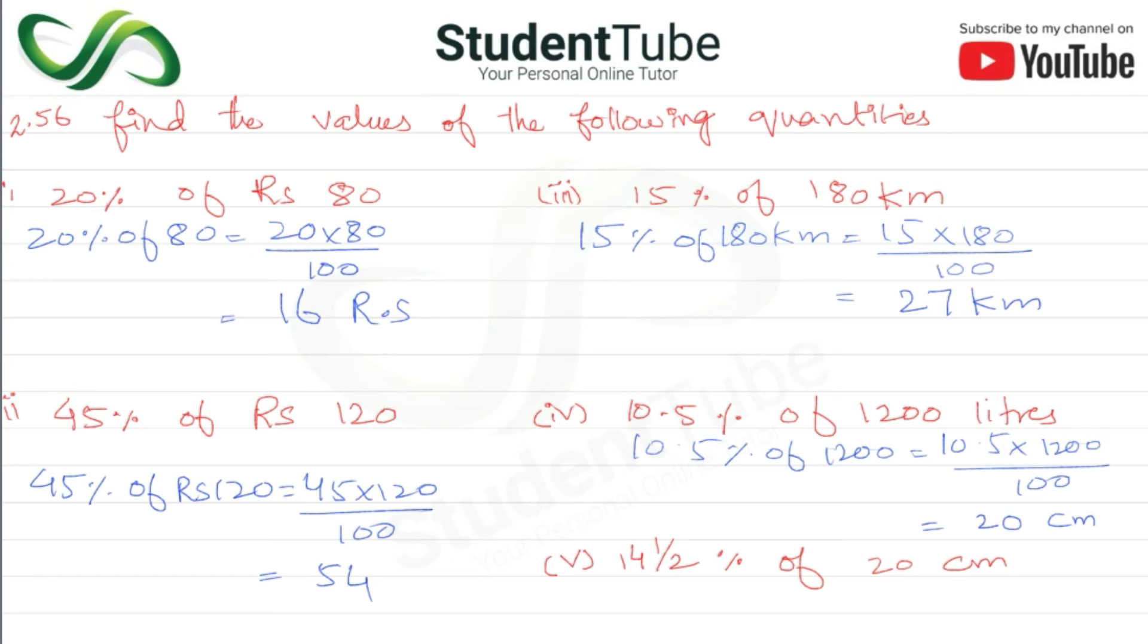Now 14 and one upon two, that means 14.5, one upon two means 0.5 percent of 20 centimeter. So it will be 14.5 into 20 divided by 100. The answer is 2.9 centimeters. These are very easy questions, I hope you enjoyed them.